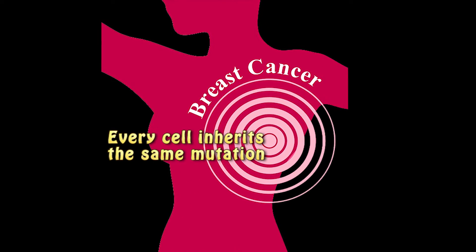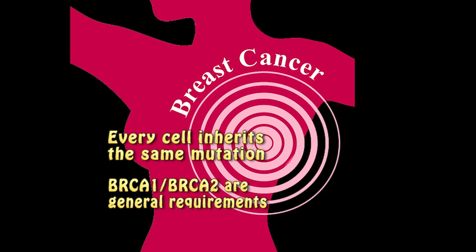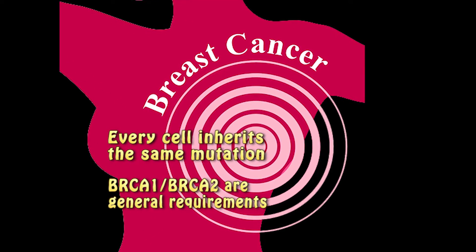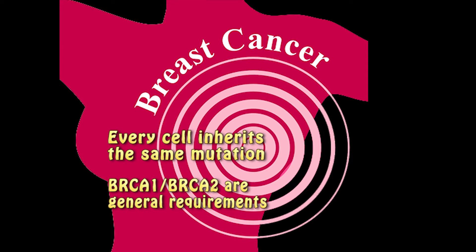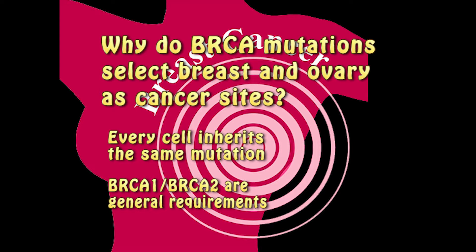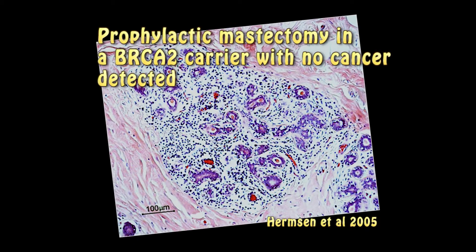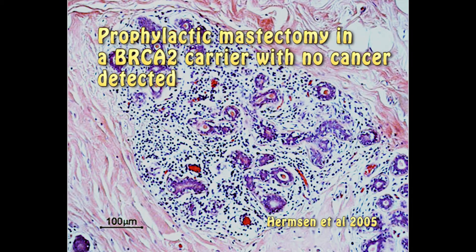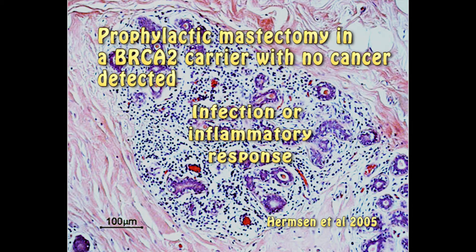But every cell with a nucleus has the same mutation, and BRCA1 and BRCA2 are general cell requirements. So this work began to try to figure out how BRCA gene mutations are able to select breast and ovary as the sites where cancer occurs. This shows breast tissue removed in a prophylactic mastectomy from a BRCA2 mutation carrier.